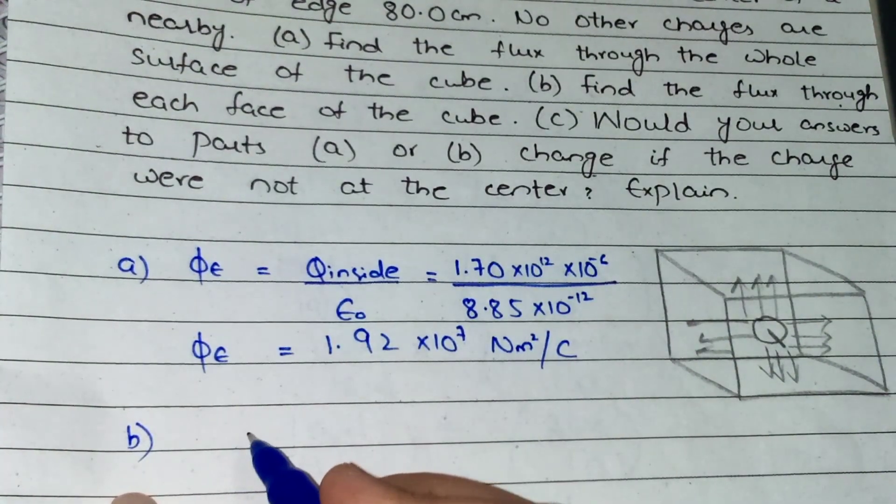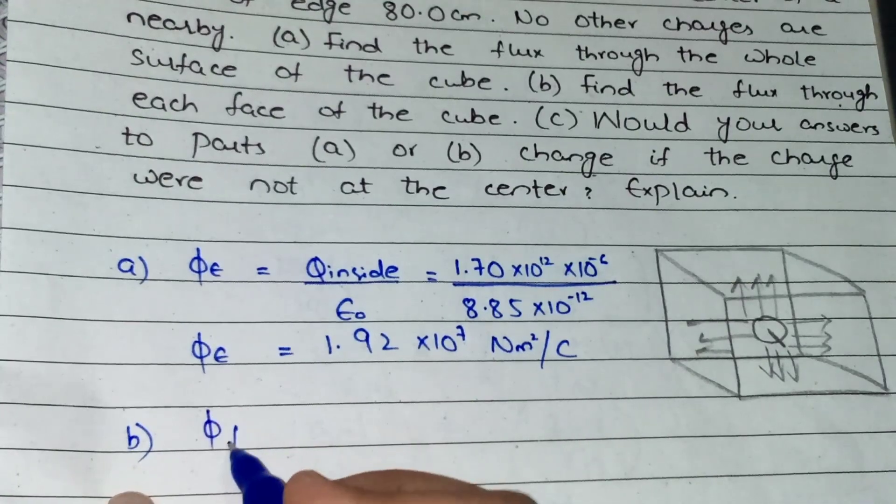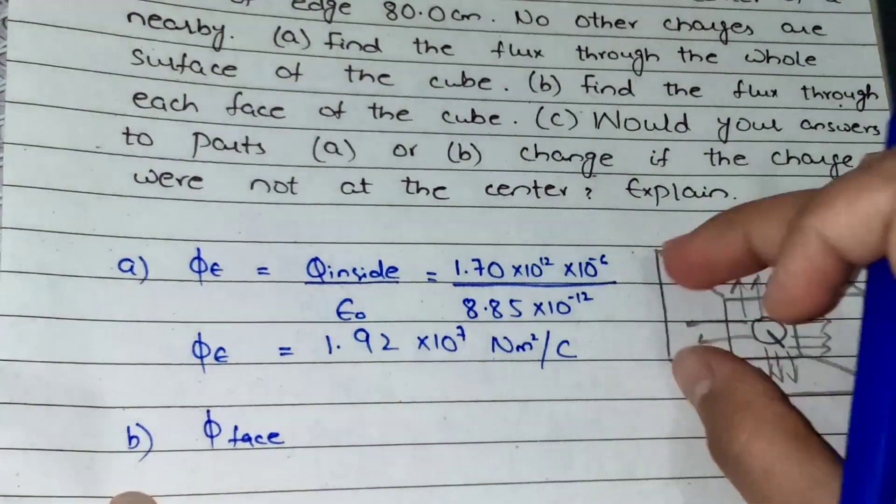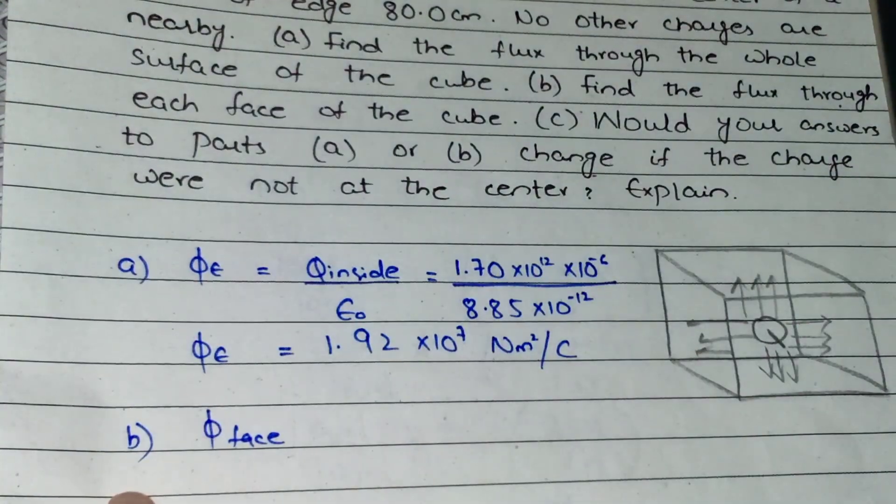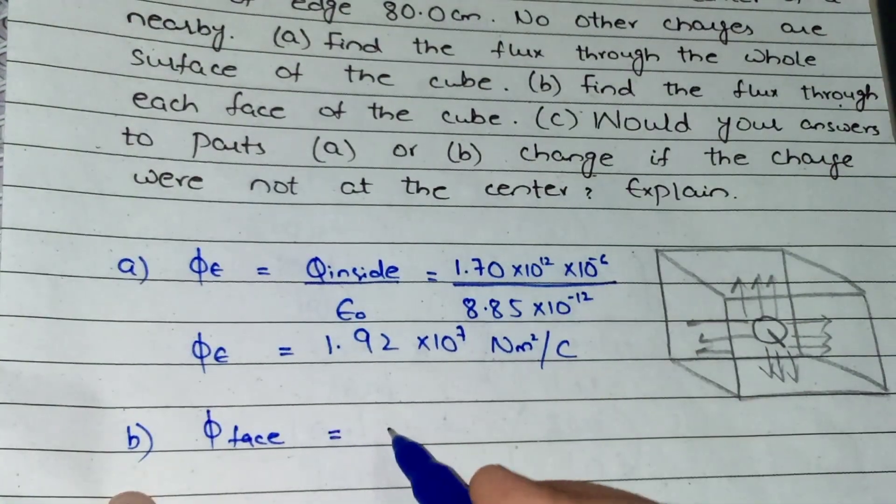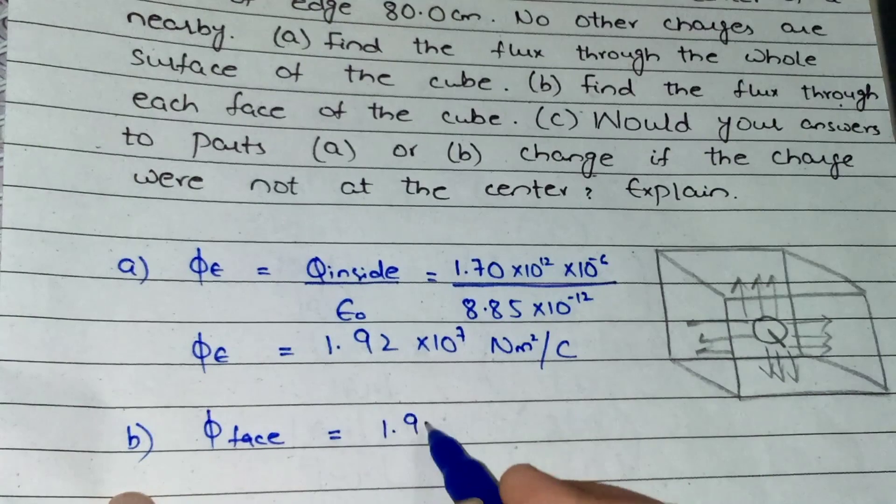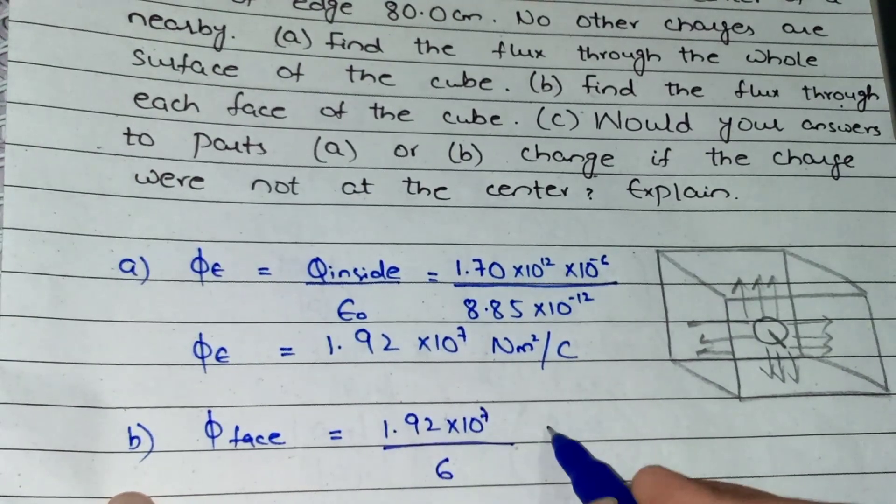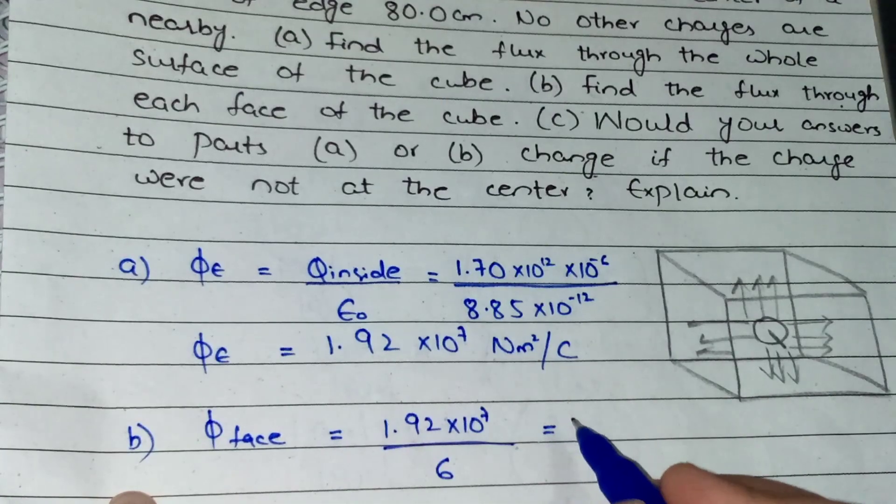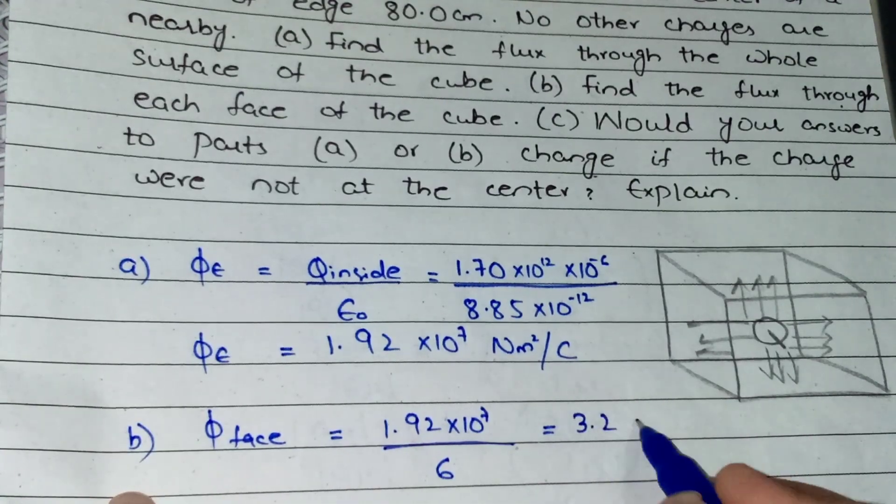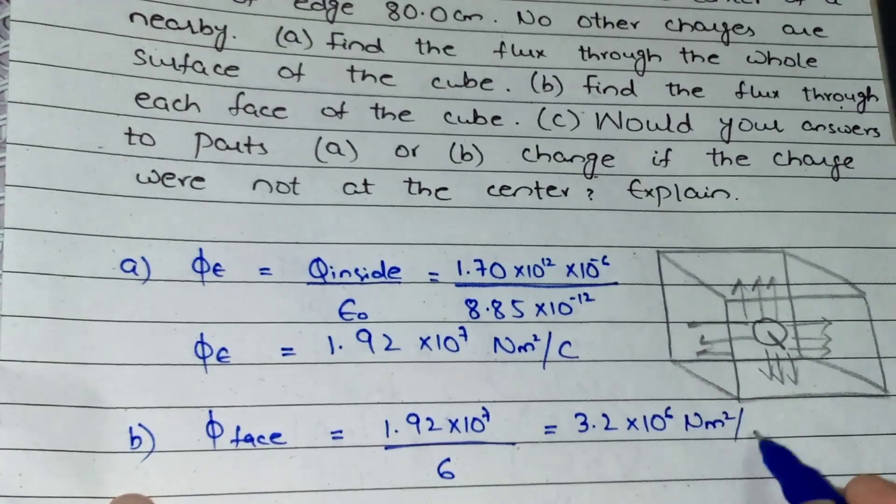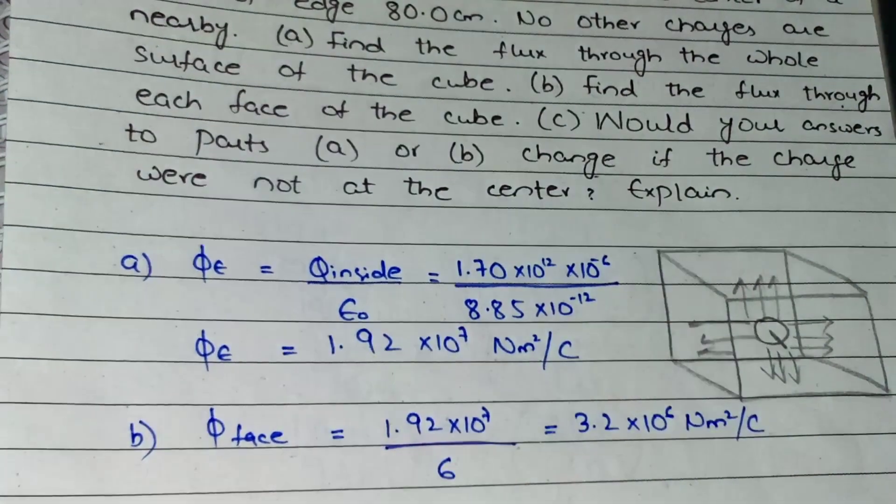For part B, I divide by 6 because the cube has 6 sides. The flux on each face is 1.92 times 10 to the 7 divided by 6, which equals 3.2 times 10 to the 6 newton meter squared per coulomb. So that's part B.